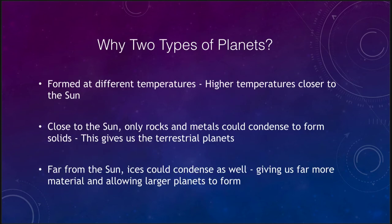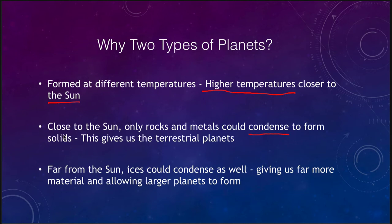What might cause us to have these two different types of planets? We believe it has to do with how and where they formed in the solar system. When you're close to the Sun you would have a higher temperature, so as the solar system was forming you had higher temperatures close to the Sun and colder temperatures further away. That meant different types of materials could condense. Close to the Sun, the only things that could actually form solids were rocks and metals.